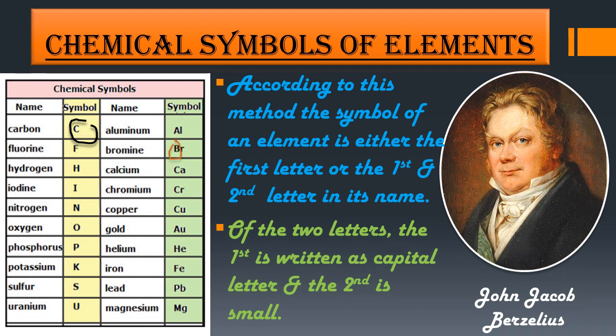For aluminium, the symbol is Al — the first letter A is capital and the next letter l is small. For bromine, B is the first letter (capital) and r is the second letter (small), giving the symbol Br. These are the chemical symbols according to John Jacob Berzelius.